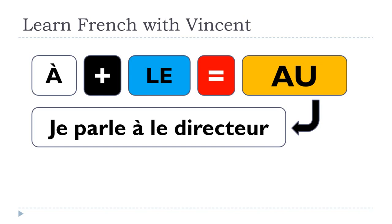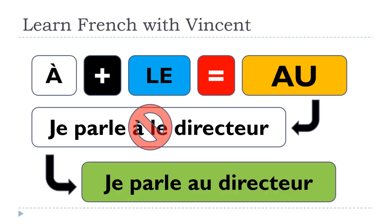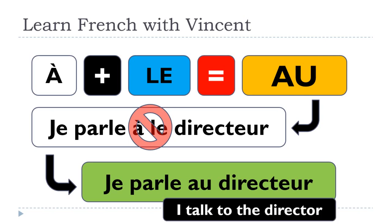A common mistake is to say 'Je parle à le directeur', because people tend to forget this rule — it's a logical mistake. But you need to remember that 'À LE' won't work, so you must use AU: 'Je parle au directeur'. That's because 'directeur' is masculine, so the article LE is needed, but À + LE becomes AU. 'Je parle au directeur' — I talk to the director.